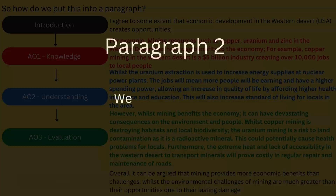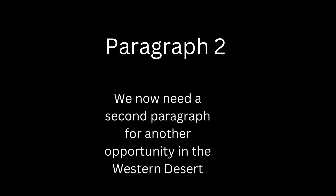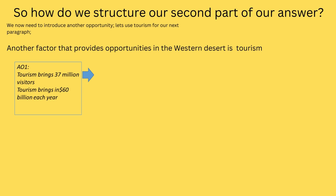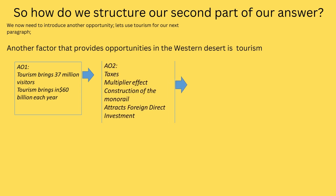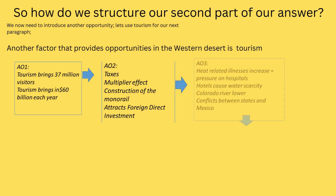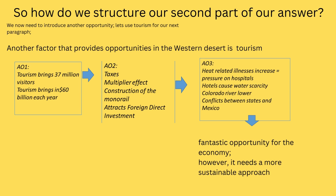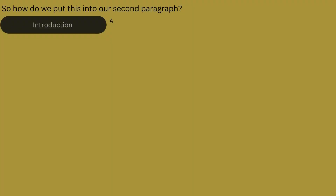Now we need our second paragraph, so let's do the exact same structure but for tourism. We first need our introduction sentence. We need our knowledge. We need our understanding. We need our limitations. Now we've evaluated, we need our second conclusion. There we have it — this is our second paragraph. Now let's look at that paragraph in detail.